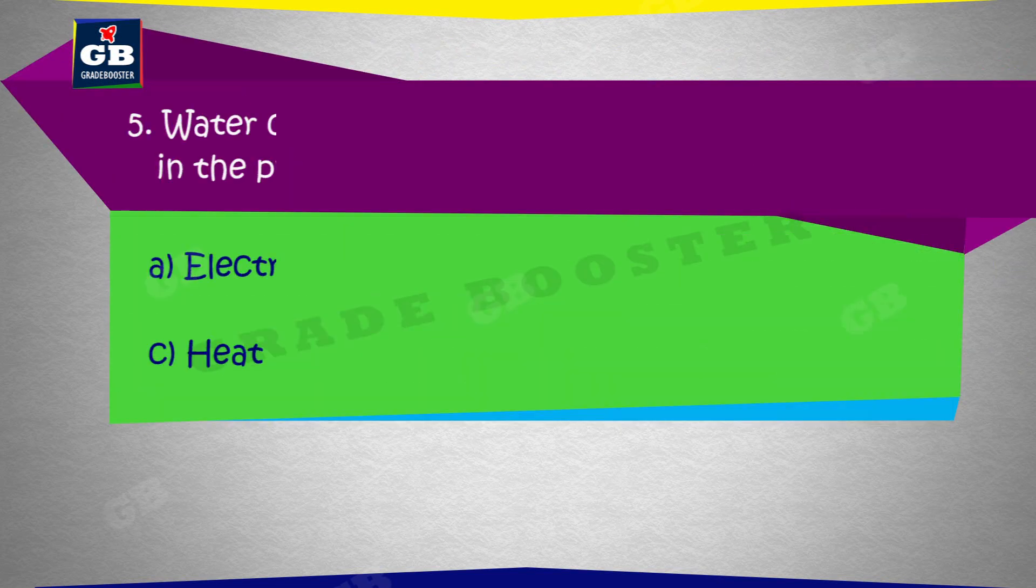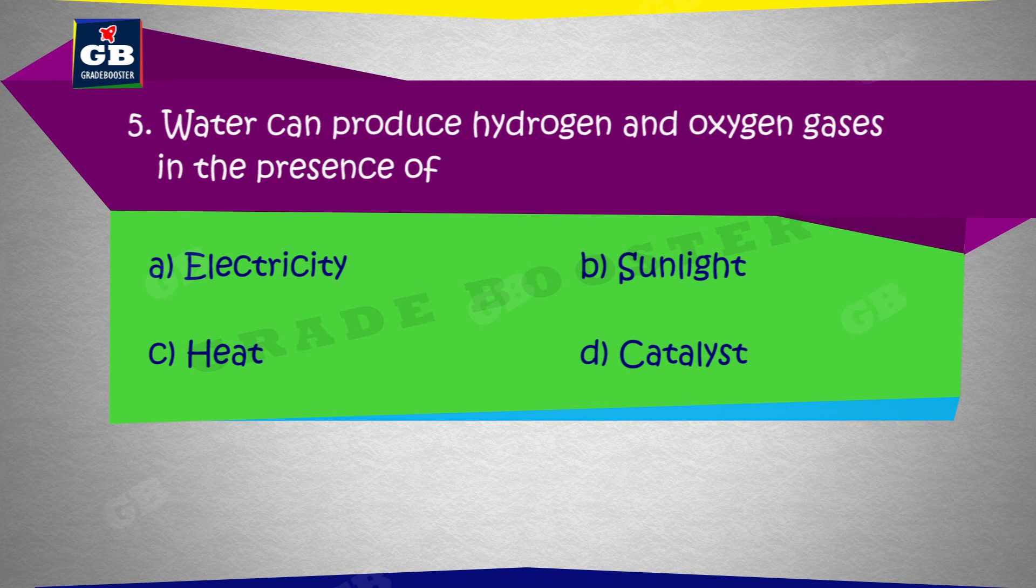Water can produce hydrogen and oxygen gases in the presence of: A. Electricity, B. Sunlight, C. Heat, D. Catalyst.